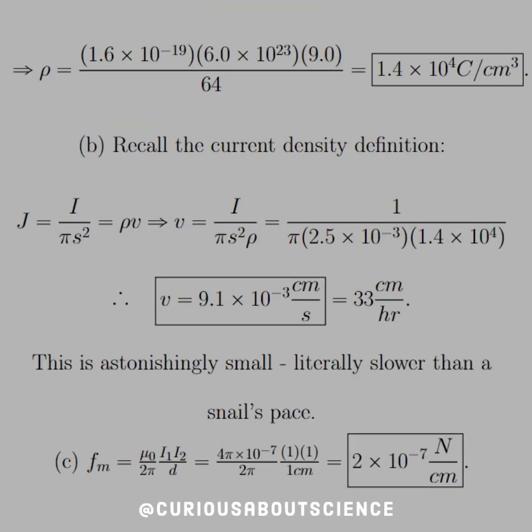Alright, so now plugging these all in, we end up with a density of 1.4 times 10 to the 4 Coulombs per centimeter cubed.